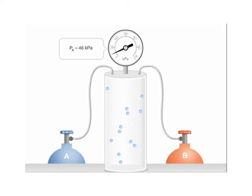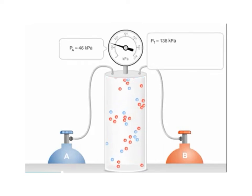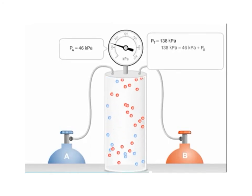Here's a problem for you to try. We're going to start with a container that has a partial pressure of gas A at 46 kilopascals. We're adding gas B to get a total pressure of 138 kilopascals. What is the partial pressure of gas B?